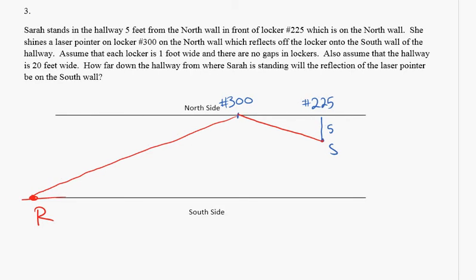Assume that each locker is one foot wide and there are no gaps in lockers. So if each locker is one foot wide, we can figure out this distance between number 225 and number 300. Assuming that lockers are numbered in order, which is probably a good assumption. Also assume that the hallway is 20 feet wide. So we know that the distance from here to here is 20 feet.